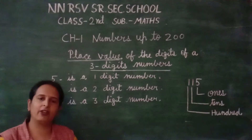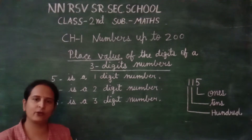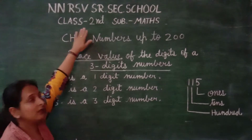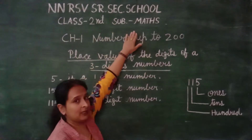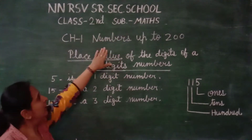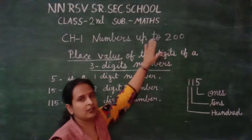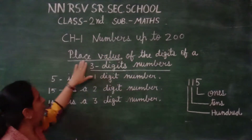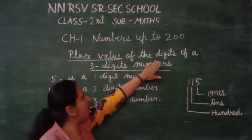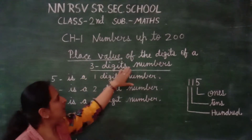Namaste children. Welcome to the YouTube channel of RSV Group of Schools. Class 2nd, Maths, Chapter No. 1, Numbers up to 200. And the topic is place value of the digits of 3-digit numbers.